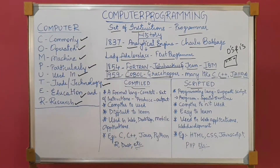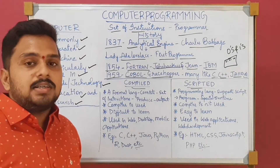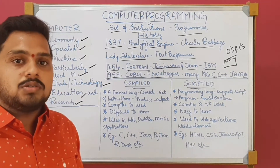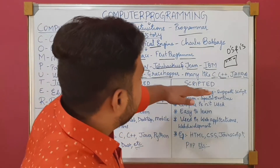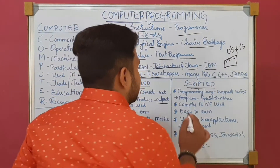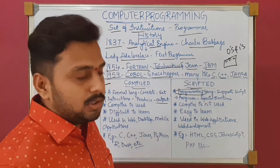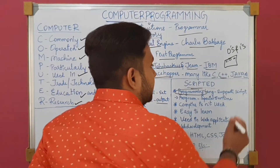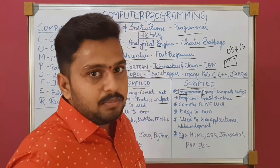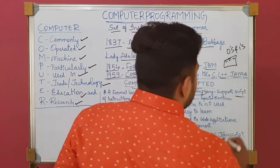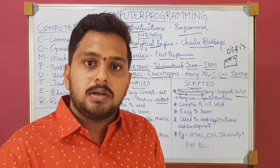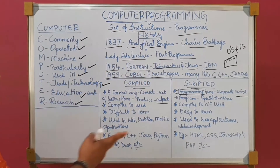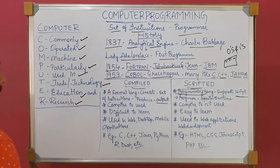What do we mean by compiled programming? Compiled programming is a formal language which consists of a set of instructions to produce various kinds of output. In scripted programming, it's actually not a programming language — it's a scripted language, because it supports only scripts, like HTML and CSS scripting. It consists of a special runtime environment. Let us see the difference between scripted and compiled.